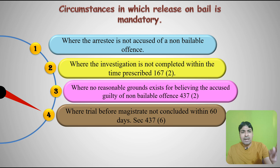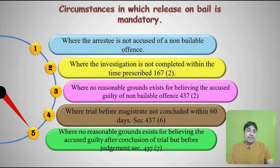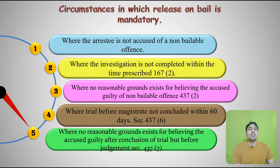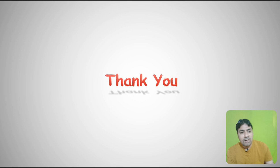The last circumstance is where no reasonable ground exists for believing the accused guilty after conclusion of trial but before judgment. If the trial has concluded and the magistrate is satisfied that the accused is to be acquitted but the judgment will be pronounced after 10 days, and the accused is in jail, the court must release them on bail today on the condition that they must appear when judgment is pronounced. These are the particular conditions in which release on bail is mandatory. I hope you understand this topic. Please subscribe to my channel, hit the notification button, hit the like button, and share this video with your friends. Thank you very much.